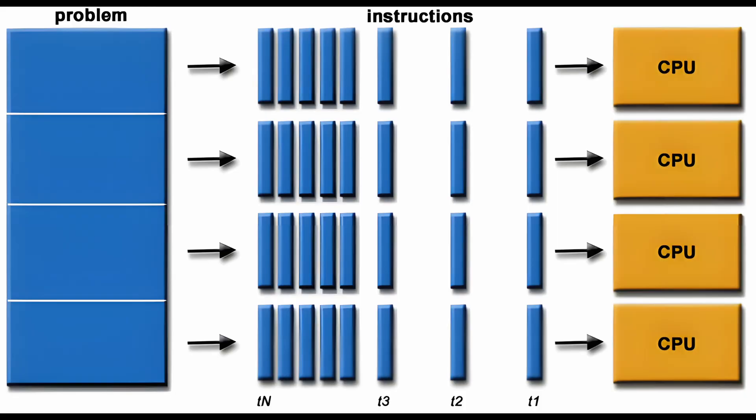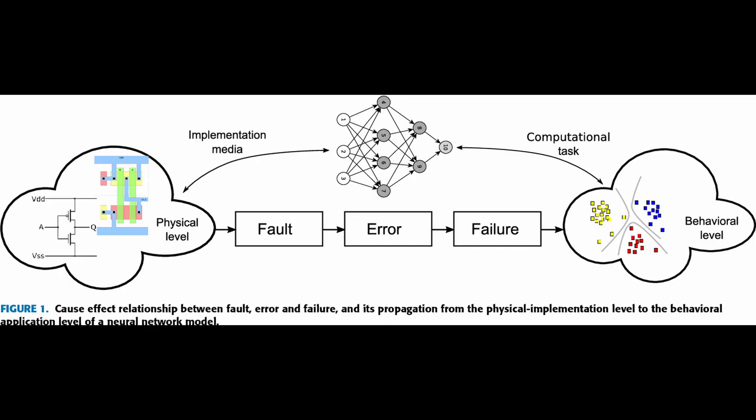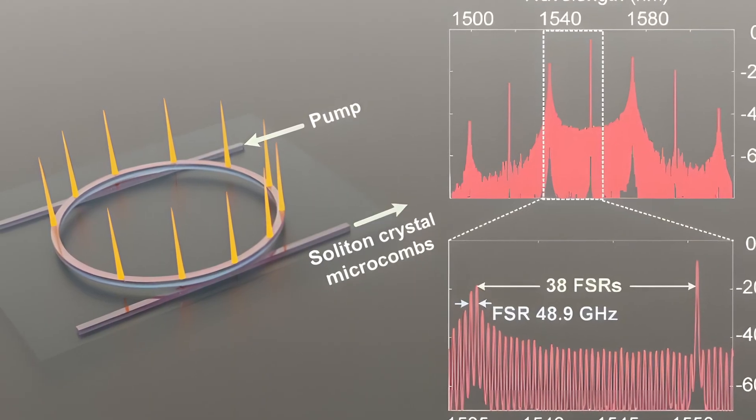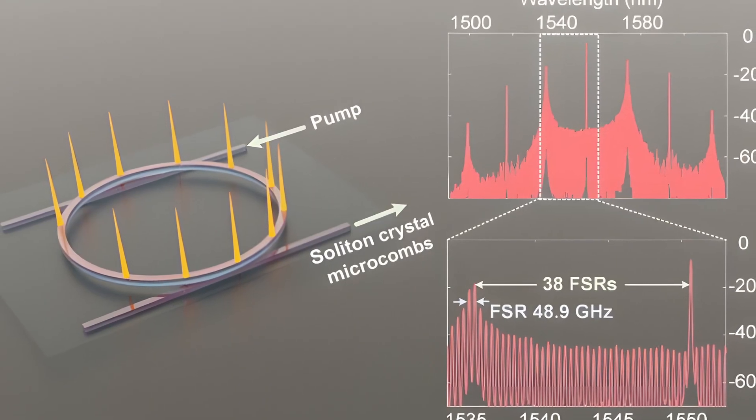Additionally, brains are more fault-tolerant than computers, which is another advantage researchers hoped to model within neuromorphic systems. Recent advancements in neuromorphic computing systems have focused on new hardware, such as microcombs.